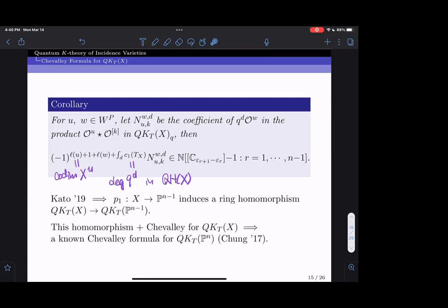A result of Kato implies that the projection from X to the projective space induces a ring homomorphism from the equivariant quantum K-theory ring of X to that of the projective space. Using this ring homomorphism and our equivariant Chevalley formula, we can recover a known Chevalley formula for the equivariant quantum K-theory of the projective space. This was a result of my academic brother Juwang Chong.